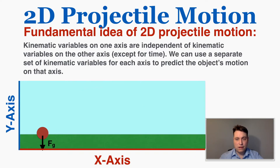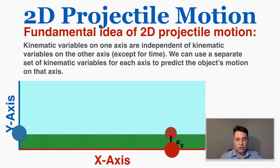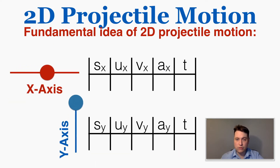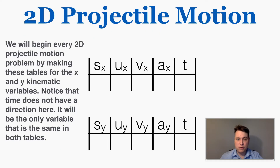The fundamental idea of 2D projectile motion is this: kinematic variables on one axis are independent of kinematic variables on the other axis, except for time. We can use a separate set of kinematic variables for each axis to predict the object's motion along that axis. For example, the object moves up and down along the y-axis but only rightward along the x-axis — these are independent. So we create two separate kinematic tables, one for x and one for y. Time doesn't have a direction, so it's the only variable that is the same in both tables.